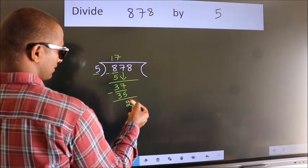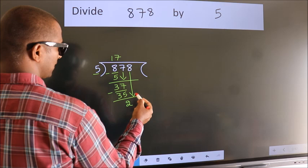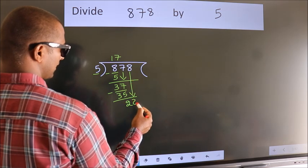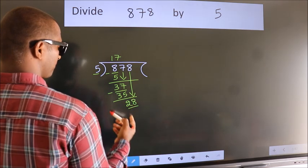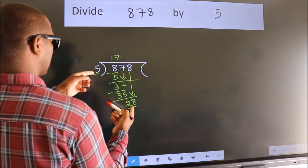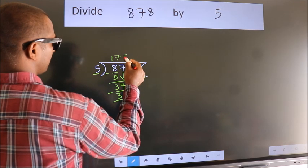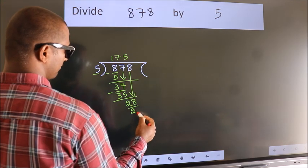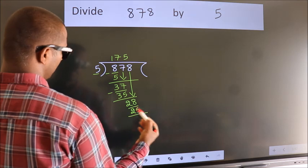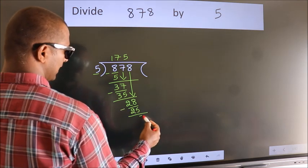After this, bring down the beside number. So, 8 down, making 28. A number close to 28 in the 5 table is 5 5s, which is 25. Now we subtract and get 3.